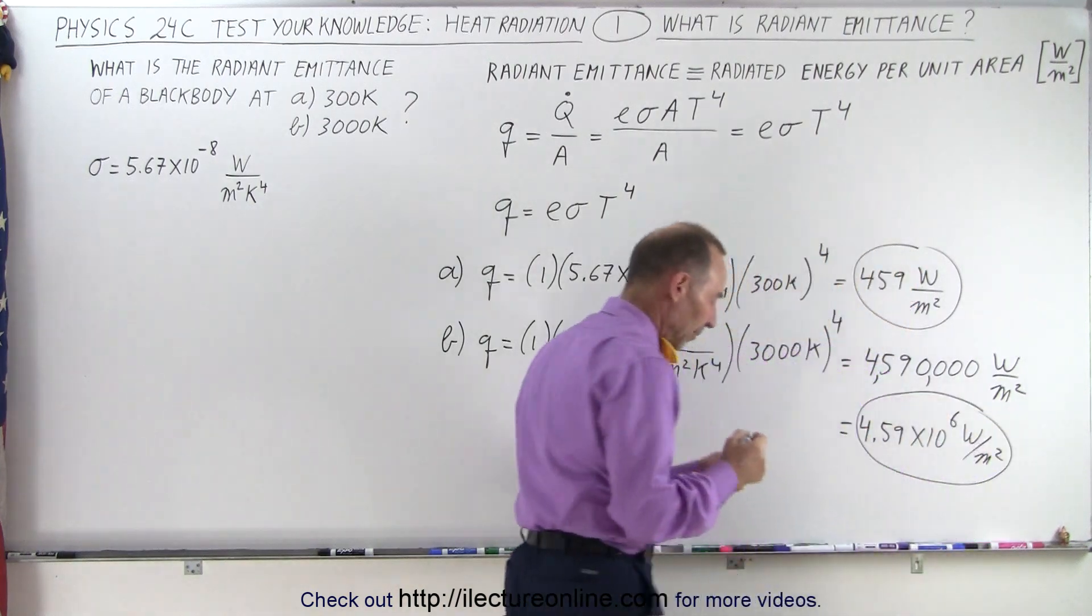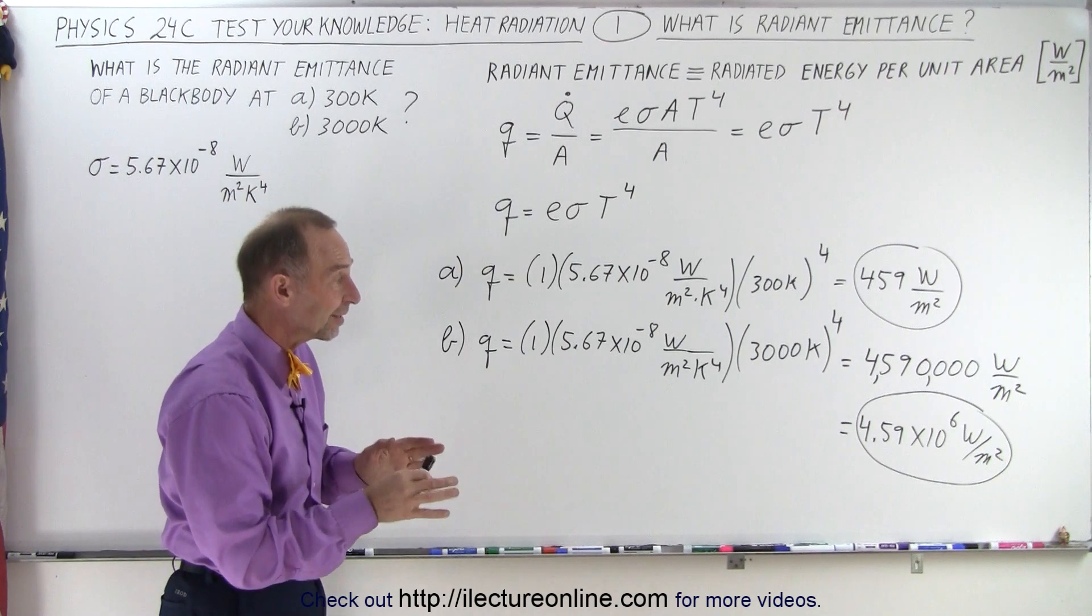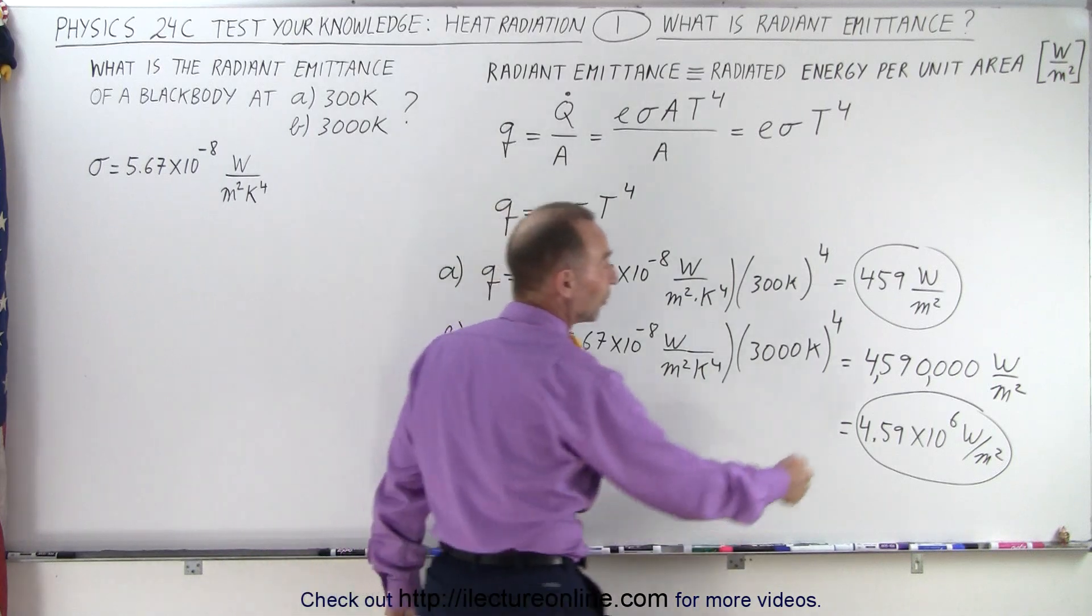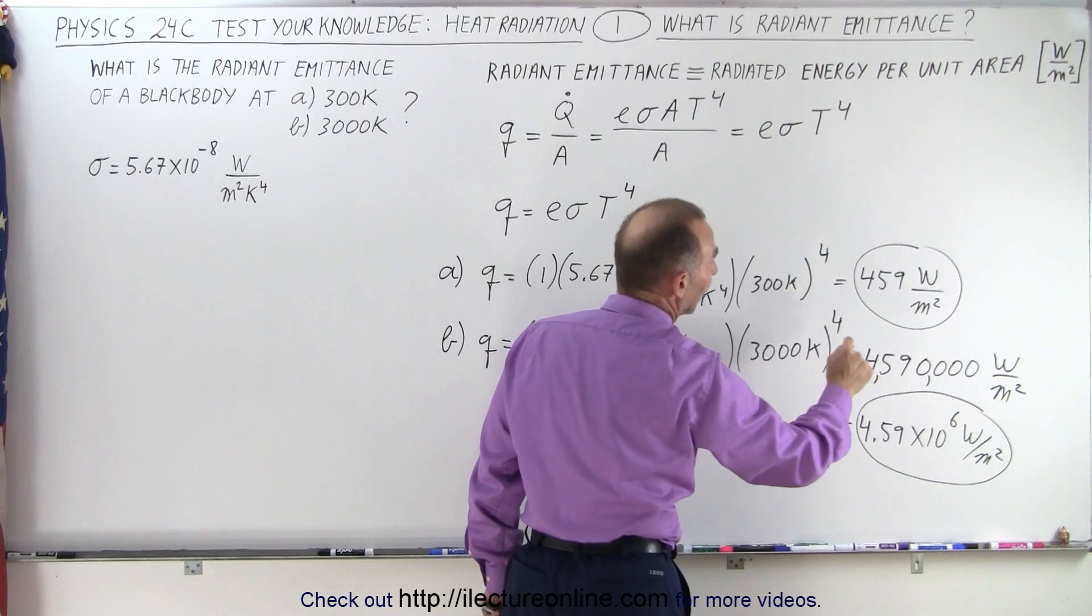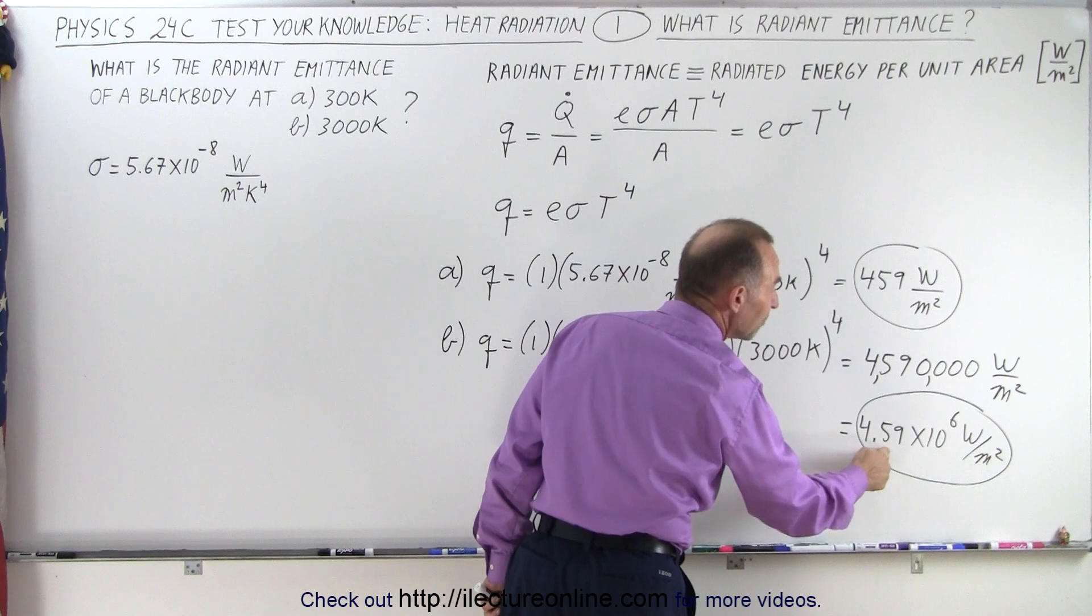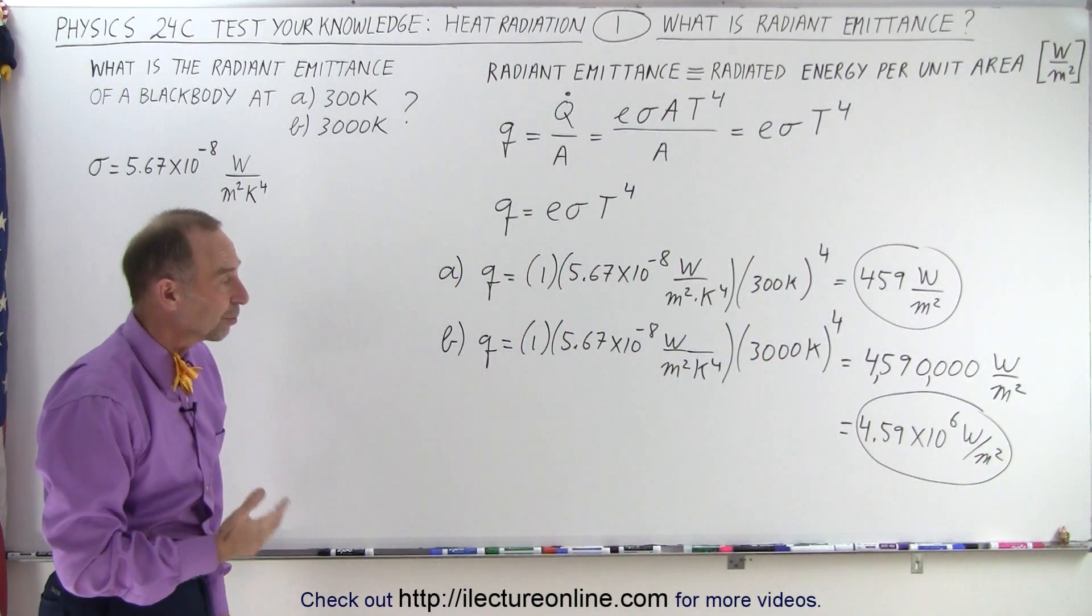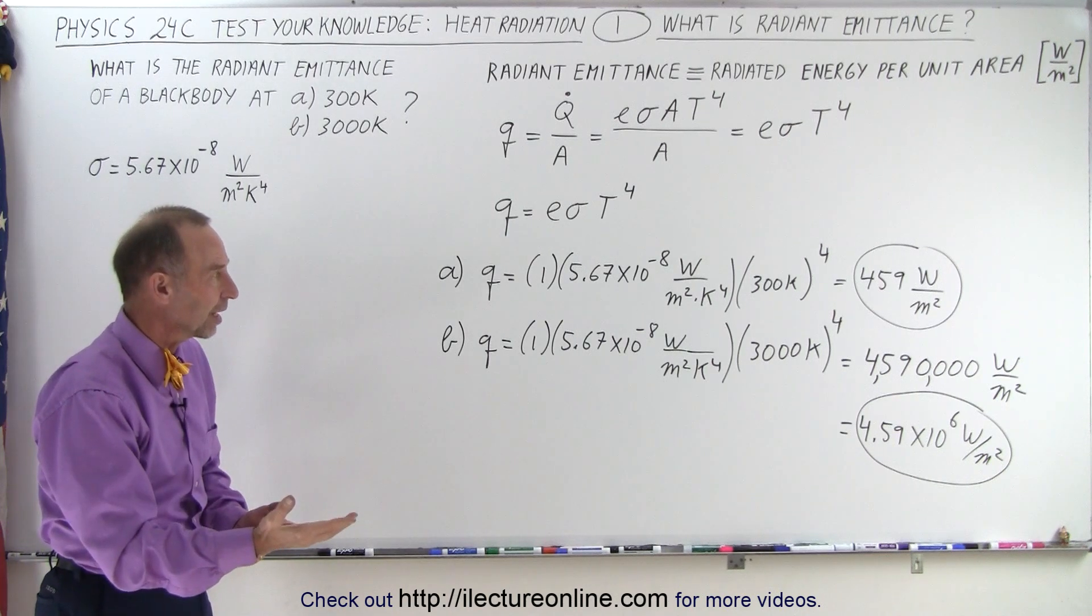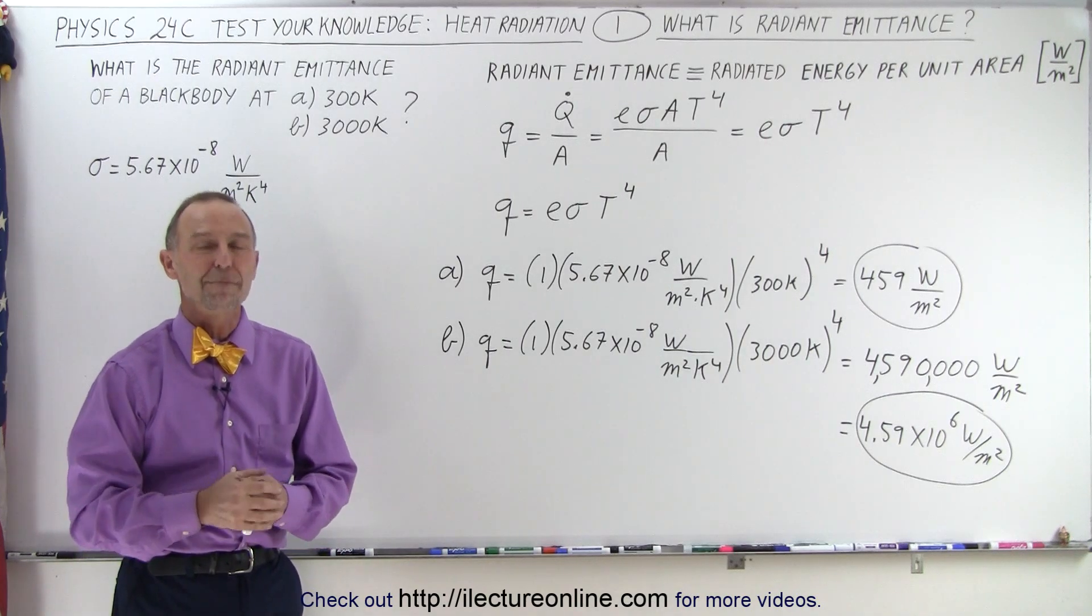So the difference between an object at 300 Kelvin, which is maybe a little bit more than room temperature, to an object that's at 3000 Kelvin, a very hot object, notice the difference in radiant emittance. That's what we call radiant emittance: 459 watts per square meter to 4.59 million watts per square meter. So 10,000 times as much radiation from an object that's at 3000 Kelvin versus at 300 Kelvin. And that's what we mean by radiant emittance.